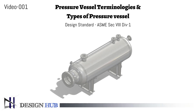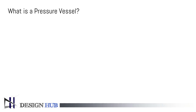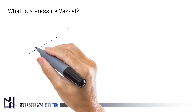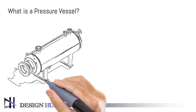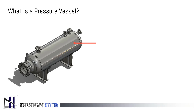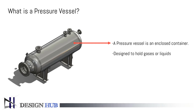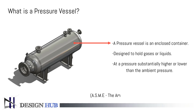Now, the question arises: what is a pressure vessel? A pressure vessel is a closed container designed to hold gases or liquids at a pressure substantially higher or lower than the ambient pressure. It comes under ASME Section 8.